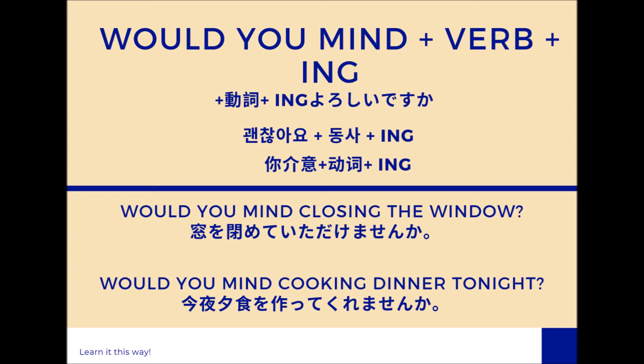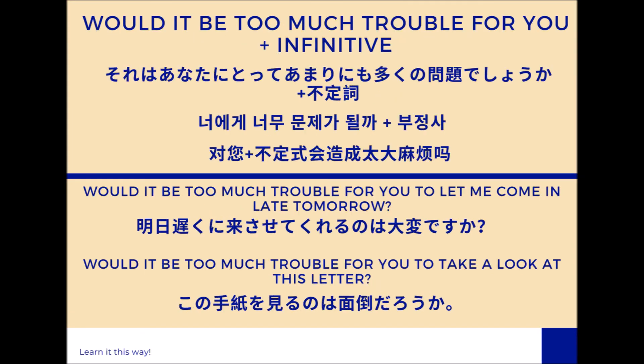Number five: 'Would you mind + verb + -ing.' Use the gerund form of the verb to ask for a favor in everyday situations. Here are some examples: 'Would you mind closing the window?' or 'Would you mind cooking dinner tonight?'